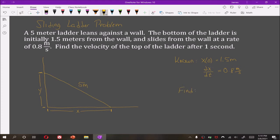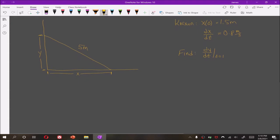We wish to find velocity of the top of the ladder after 1 second. So we want dy/dt when t is equal to 1. The equation that we're using is Pythagorean theorem which says x² + y² equals the square of the hypotenuse. So we get 2x dx/dt + 2y dy/dt is equal to 0.